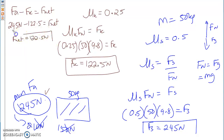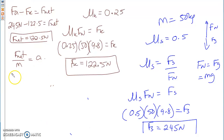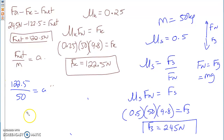If I have an F net of 122.5 newtons, do I have an acceleration? Yes. F net divided by m equals a. So 122.5 divided by 50 equals acceleration. What is your acceleration? 2.45 meters per second squared.